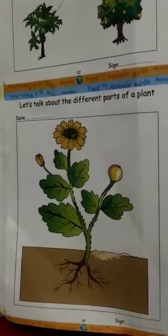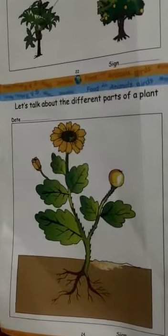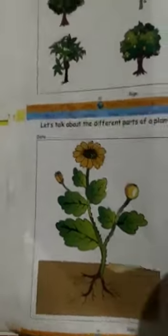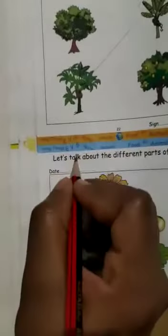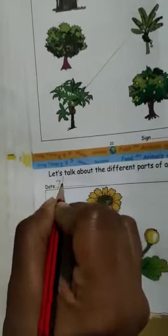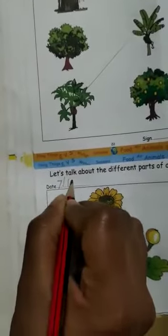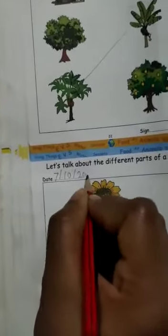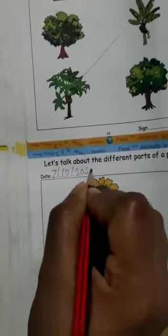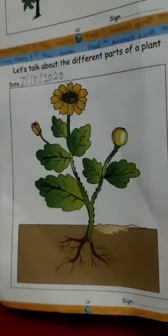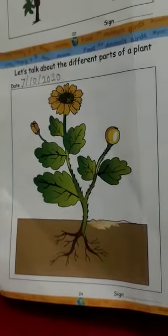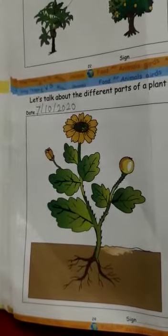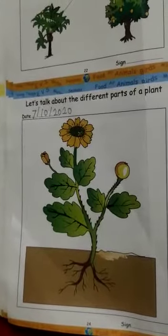So tell me first, what is the date today? Today's date is 7. So write here: 7, 10, 2020. Good. And today's day is Wednesday. Today is Wednesday.